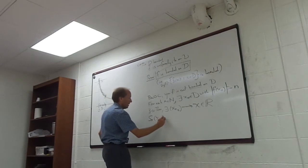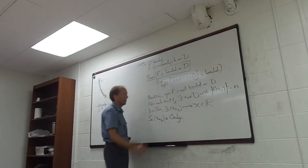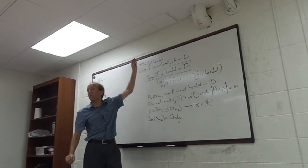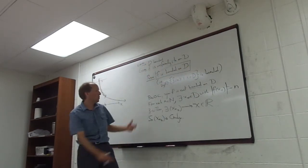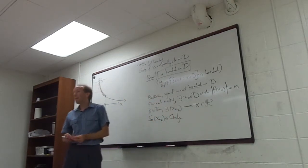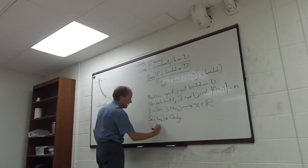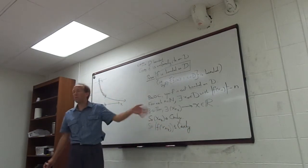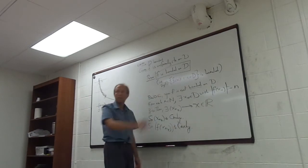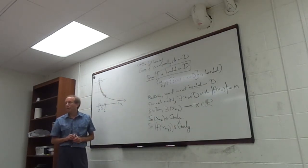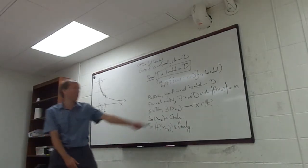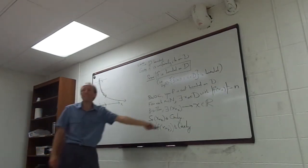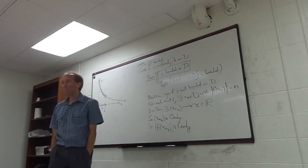Therefore, if you are given that your function is uniformly continuous on D and you have a Cauchy sequence in D, then the image of that sequence must still be Cauchy. So f(x_{n_k}) is Cauchy. Is there a problem with that? Yes there is — I'll let you guys go figure out what it is. Think about what you know about Cauchy sequences and you're about one line from being done. I'd have to let you do that part.